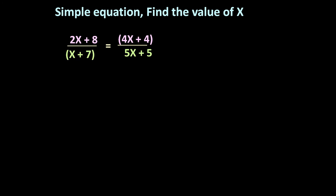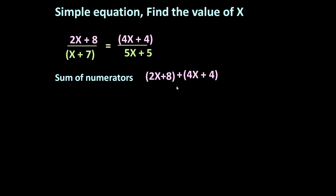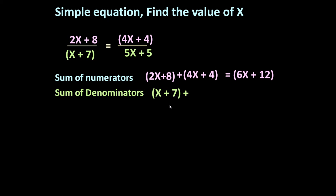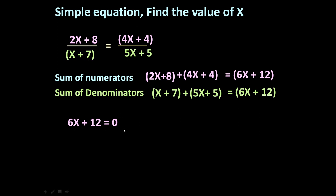Let us have one more similar problem: (2x + 8)/(x + 7) = (4x + 4)/(5x + 5). Sum of numerators: 2x + 8 + 4x + 4 = 6x + 12. Sum of denominators: x + 7 + 5x + 5 = 6x + 12. They are the same, so 6x + 12 = 0, giving x = -2. This is the answer.